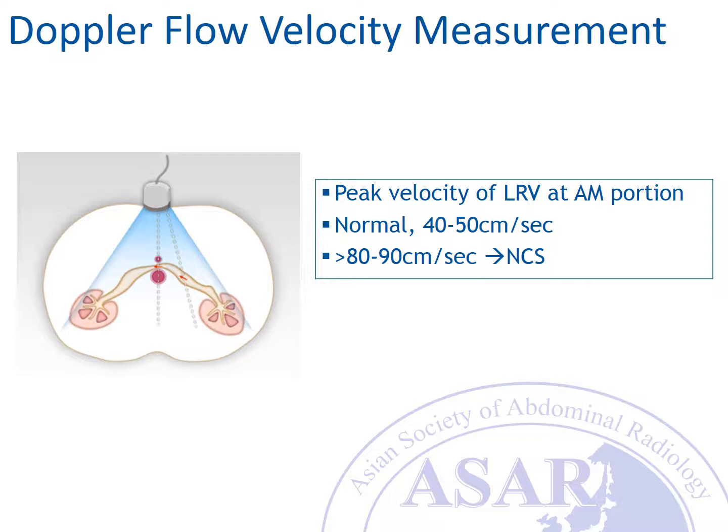Normally, the peak flow velocity in this aorta-mesenteric area is about 40 or 50 centimeters per second, but if it is higher than 80 or 90 centimeters per second, we may suggest Nutcracker syndrome.